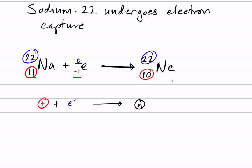But the equation is still balanced because 11 minus 1 makes 10 on this side, 10 on this side. It's a balanced nuclear equation. Sodium undergoes electron capture and changes into neon.